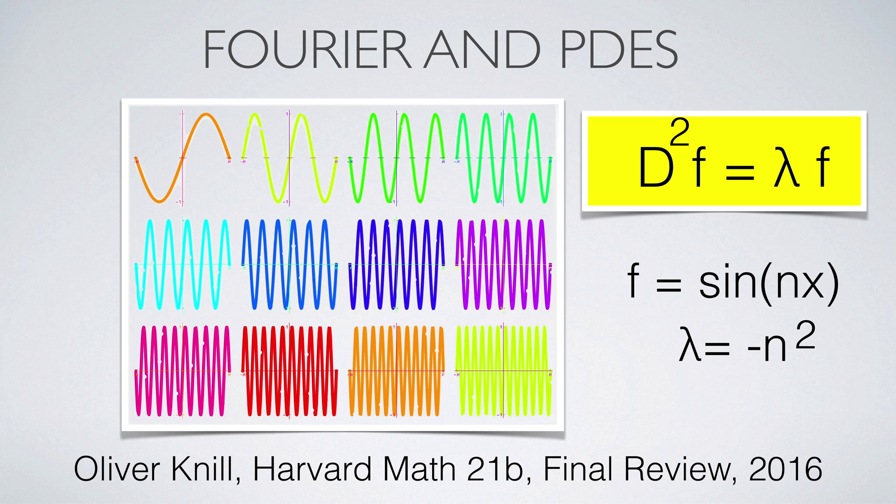Here are some slides on Fourier and partial differential equations. In all of the following, always remember that sine of n of x is an eigenfunction of the d-square operator with eigenvalue minus n squared.